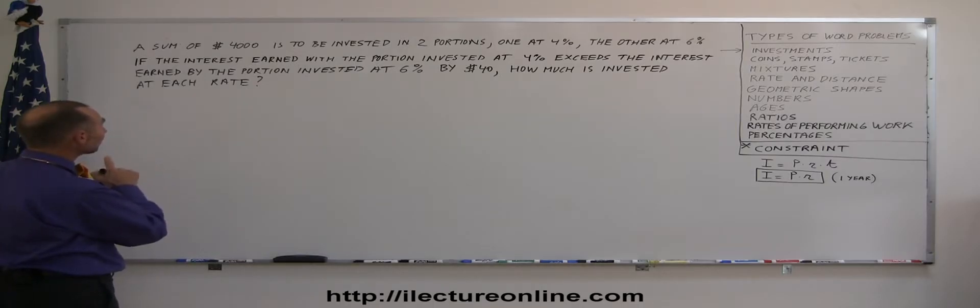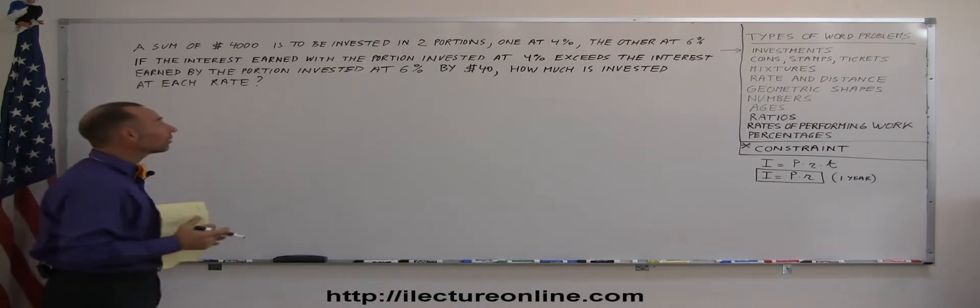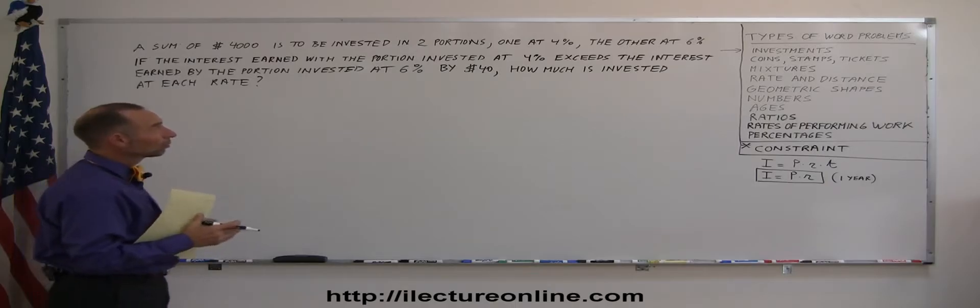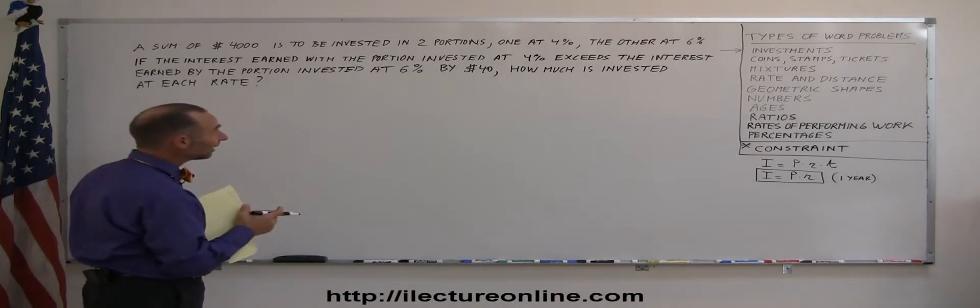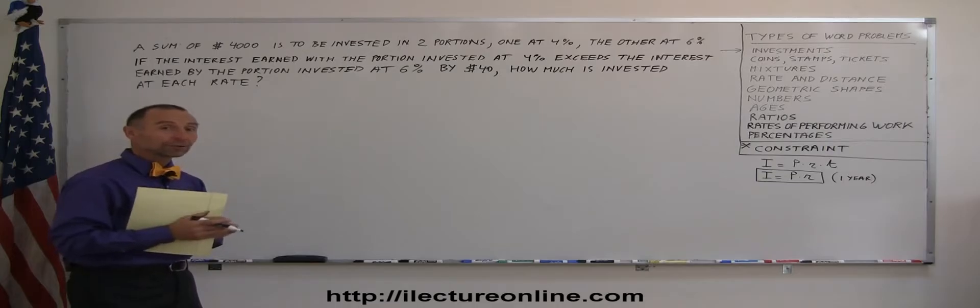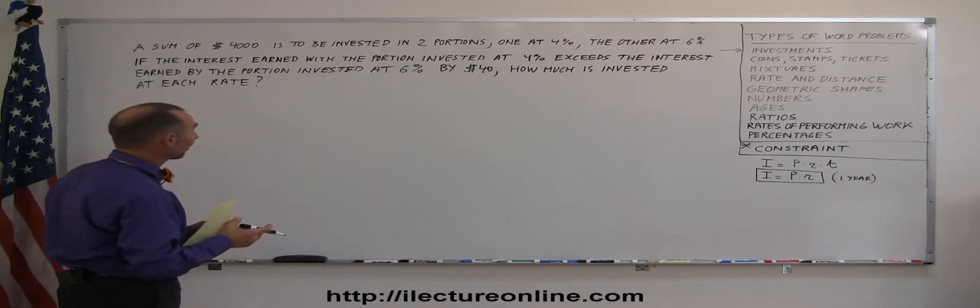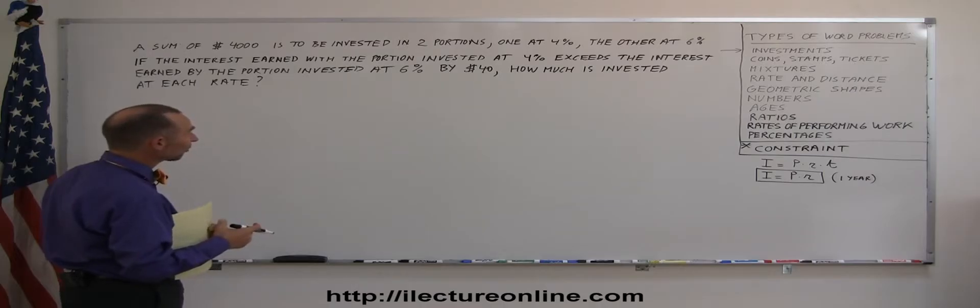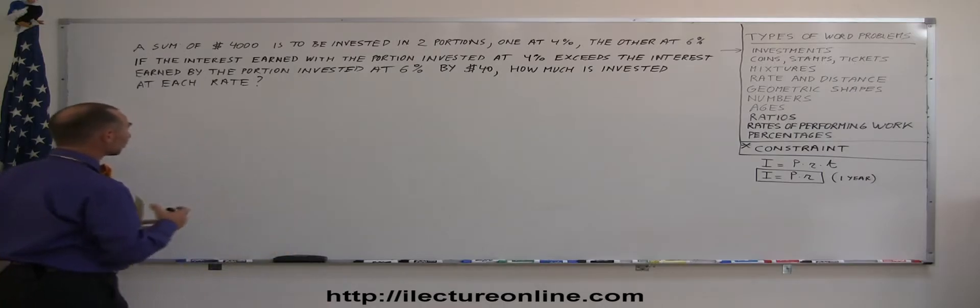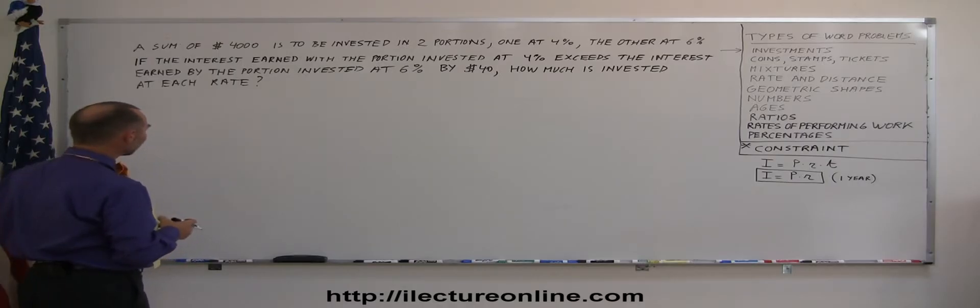We have the sum of $4,000, so a total amount of $4,000 is to be invested in two portions. Part of the $4,000 will be invested at 4%, and the other part of the $4,000 will be invested at 6%. If the interest earned with the portion invested at 4% exceeds the interest earned with the portion invested at 6% by $40, how much is invested at each rate?